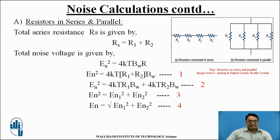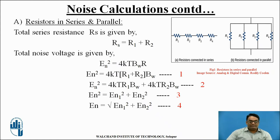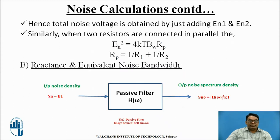This can be further written as 4KT × (R1 + R2) × BW. Simplifying the equation, we get EN² = EN1² + EN2². So we can conclude that the total noise voltage produced due to resistances connected in series is the sum of noise voltages produced due to R1 and R2. The total noise voltage is obtained by adding EN1 and EN2.